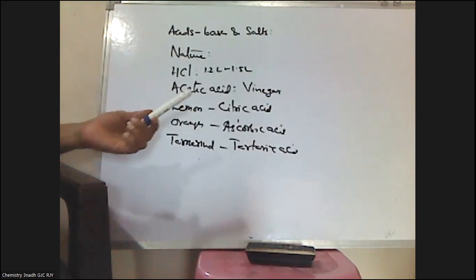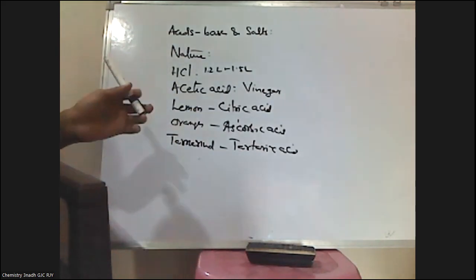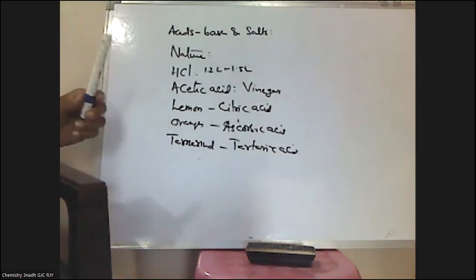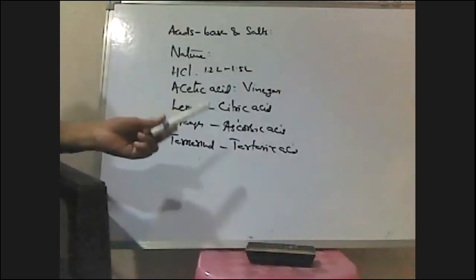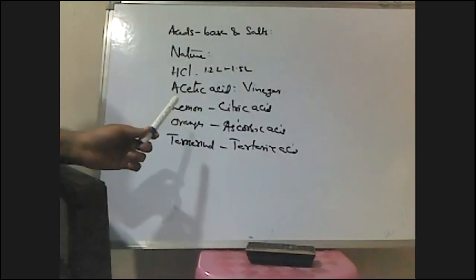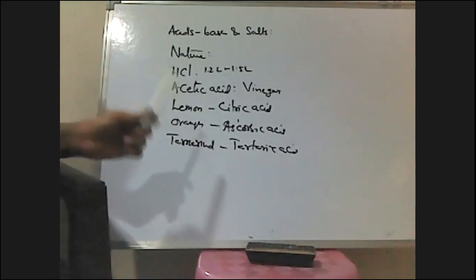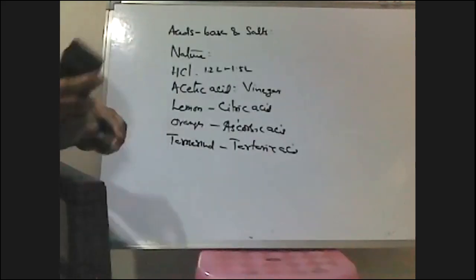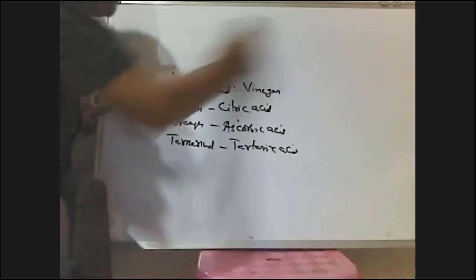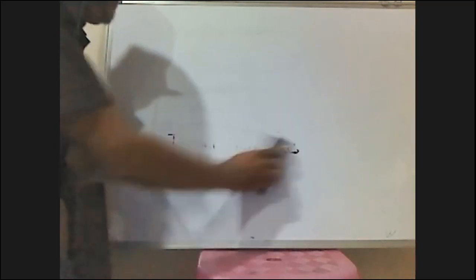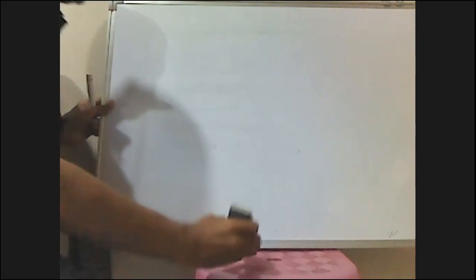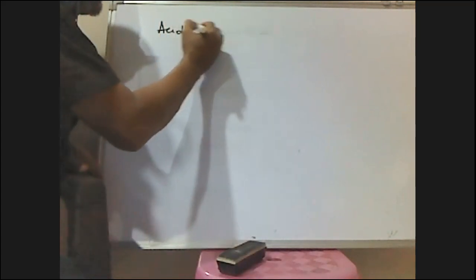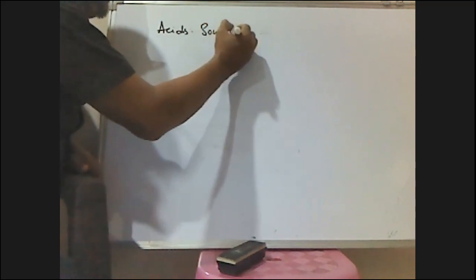What we can observe is that in nature, various acids are widely spread. Similarly, bases are formed by the neutralization reaction of acids and bases. How to recognize and differentiate these acids and bases? We know that acids are sour to taste.